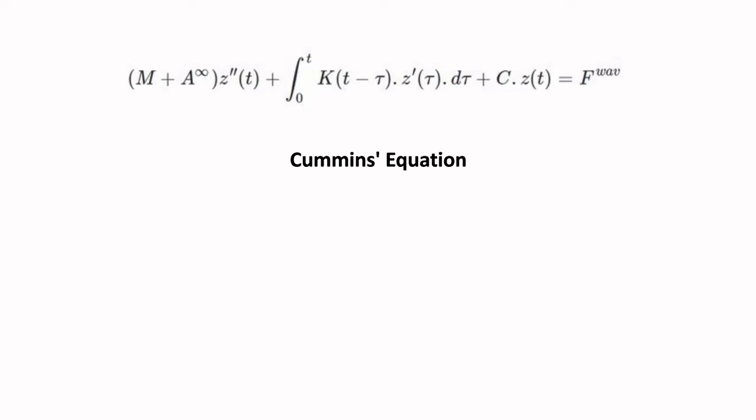One such formulation that models floating bodies is the Cummins equation developed in 1962. It decomposes this chaotic motion into a form that engineers are familiar with, equating the external and internal forces acting on the system.